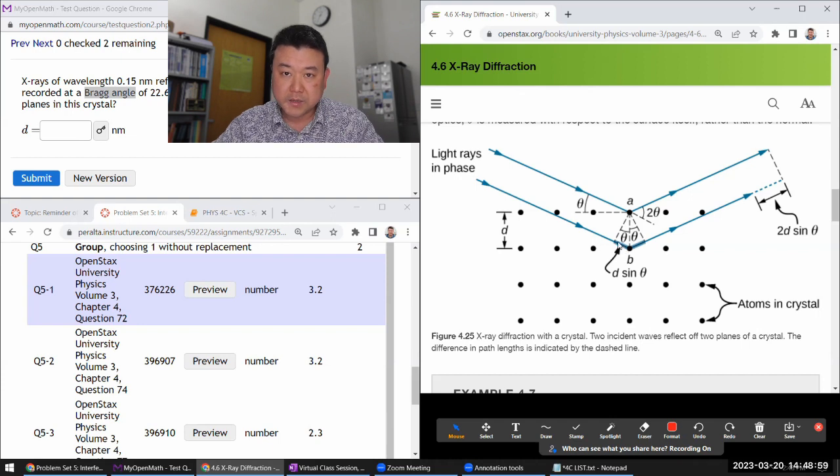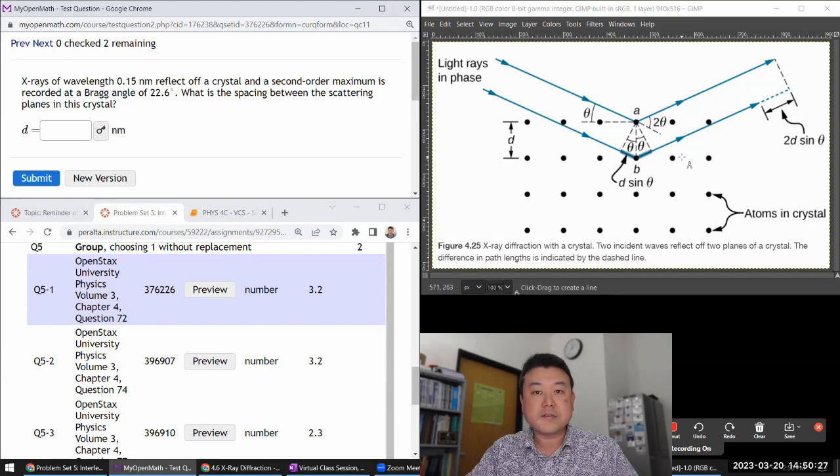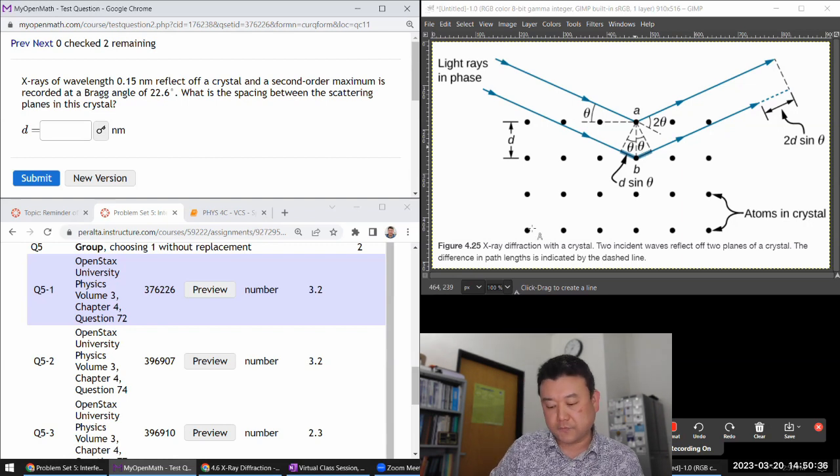It's given by twice of this difference. You can look at it as this bit here is the path length difference on the incoming side. This bit here is the path length difference on the outgoing side. So as you are detecting these two together, you have this d sin theta accumulated here. And the d is the spacing between the two neighboring layers of the crystal structure. So it says x-rays of this wavelength reflect off a crystal like this, and they are saying the second order maximum.